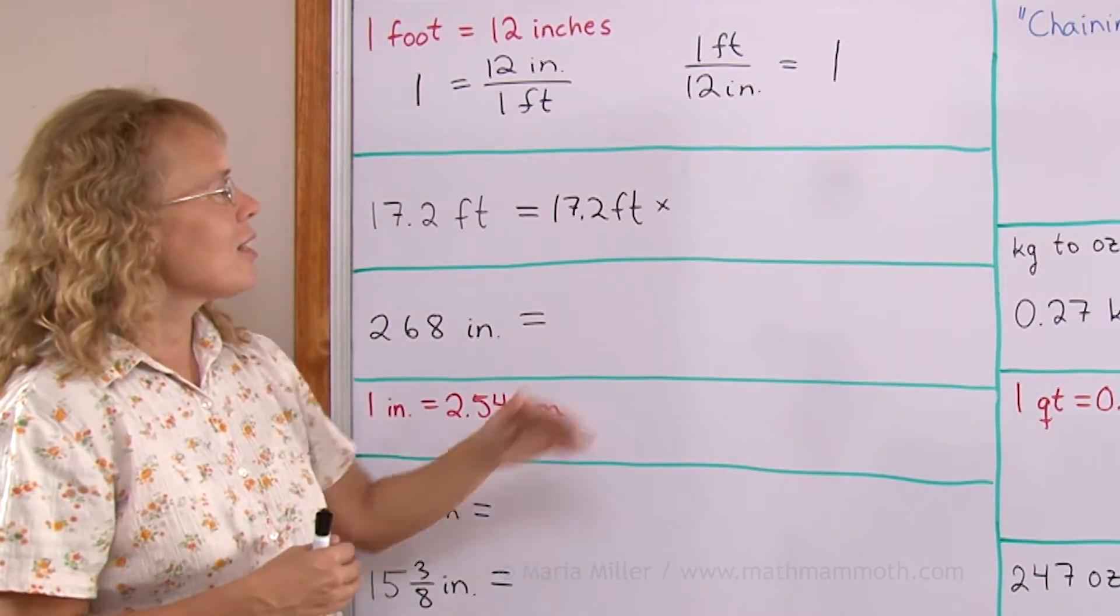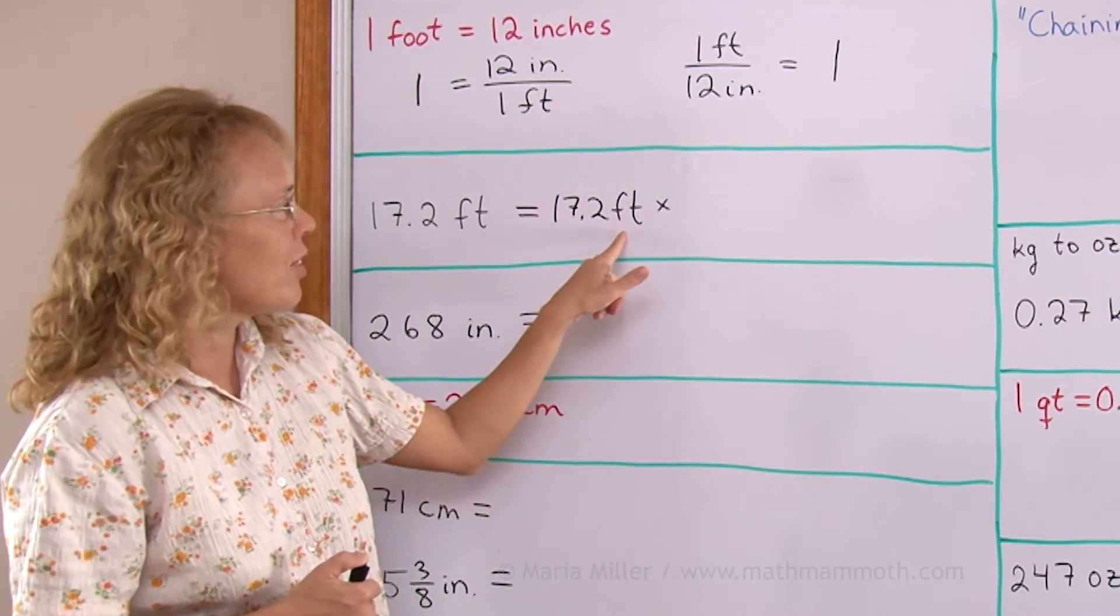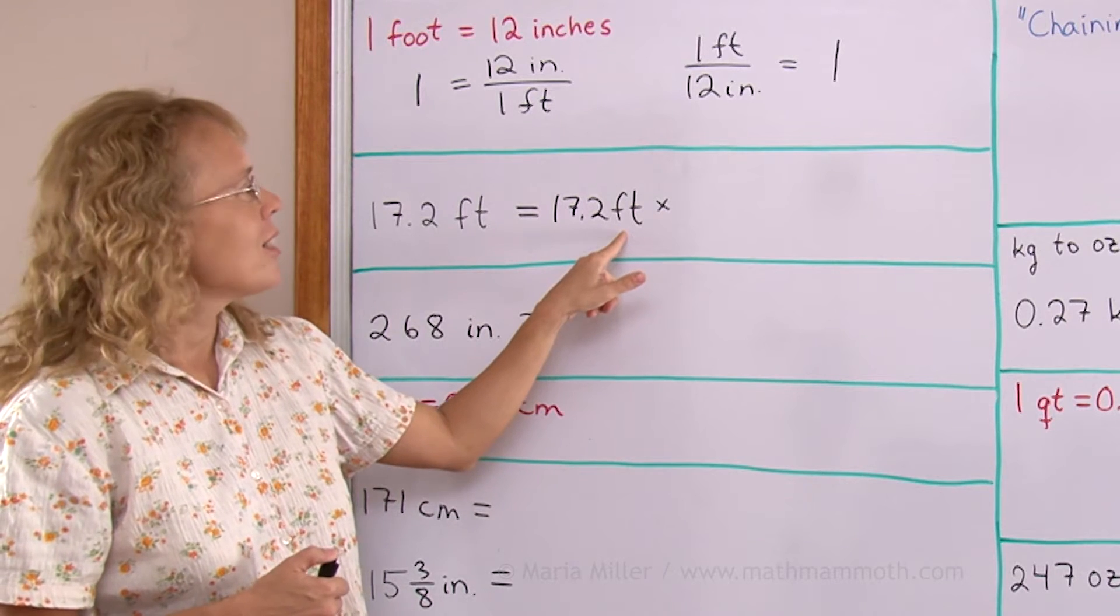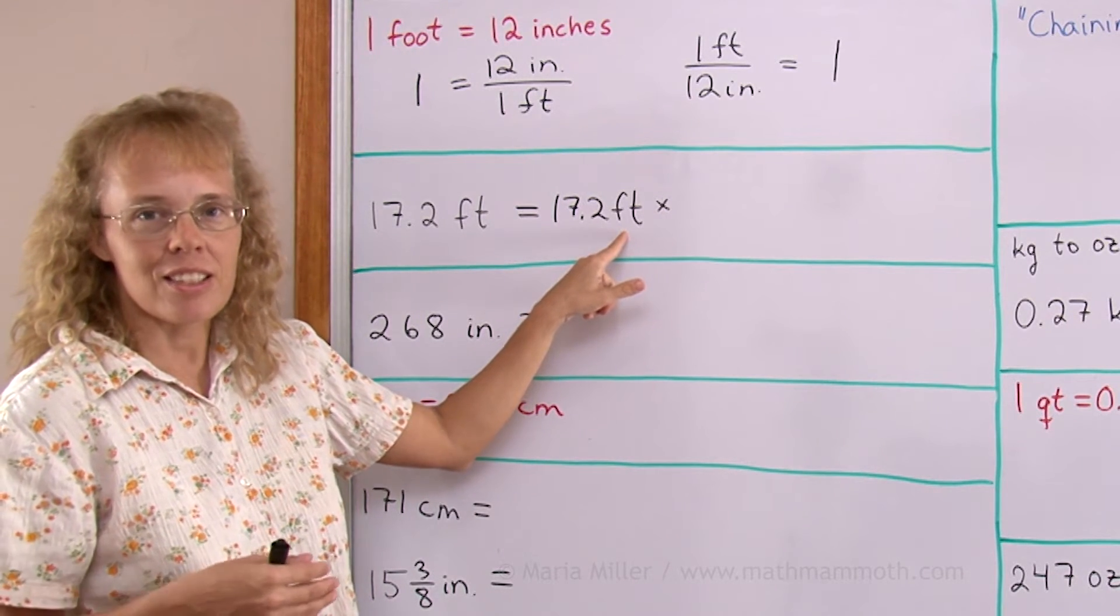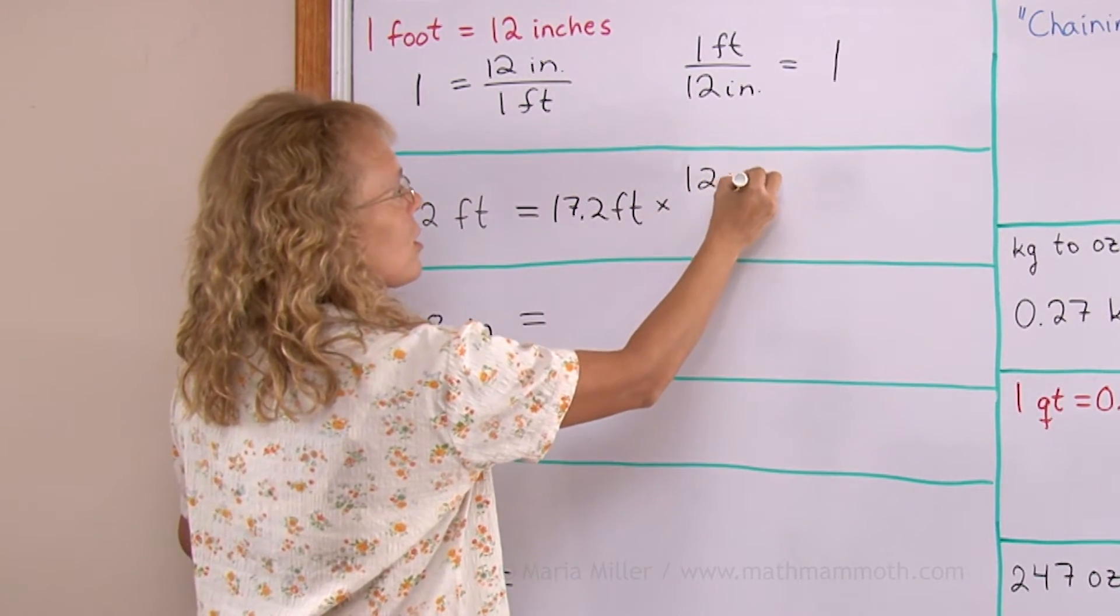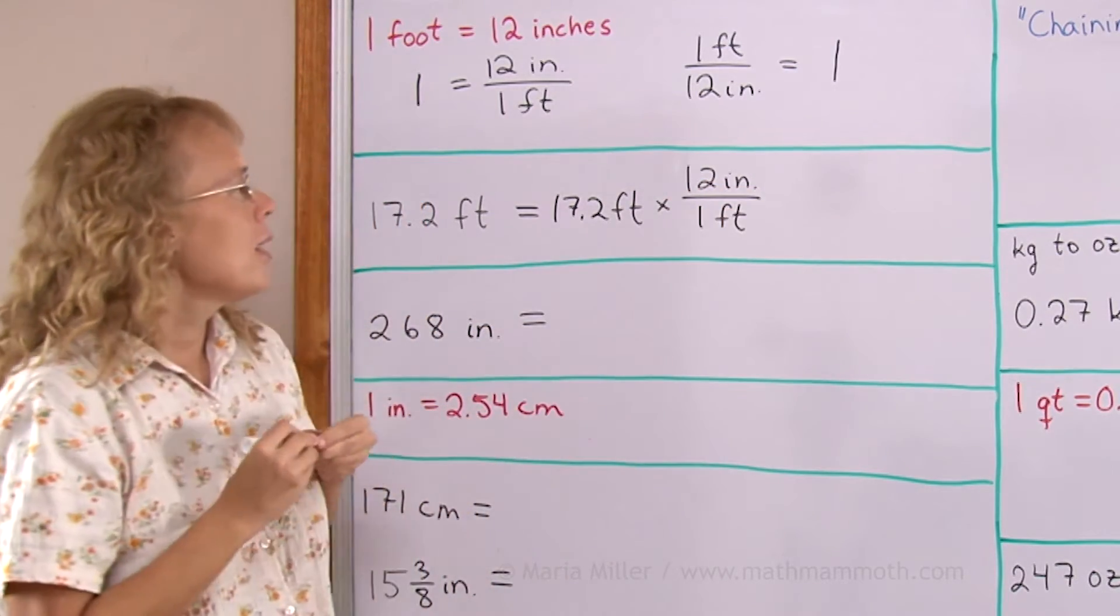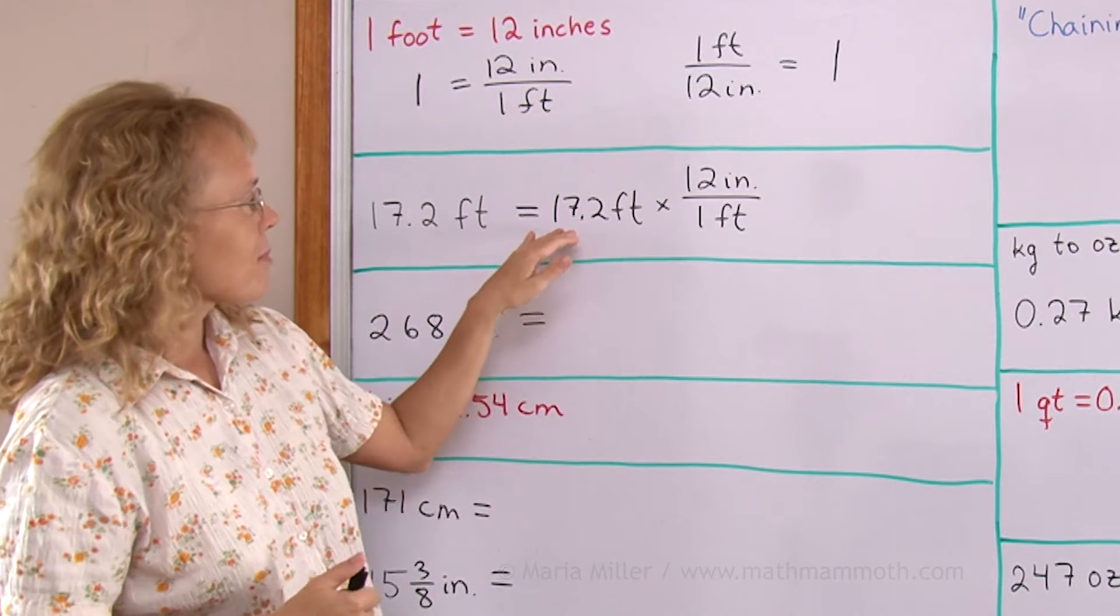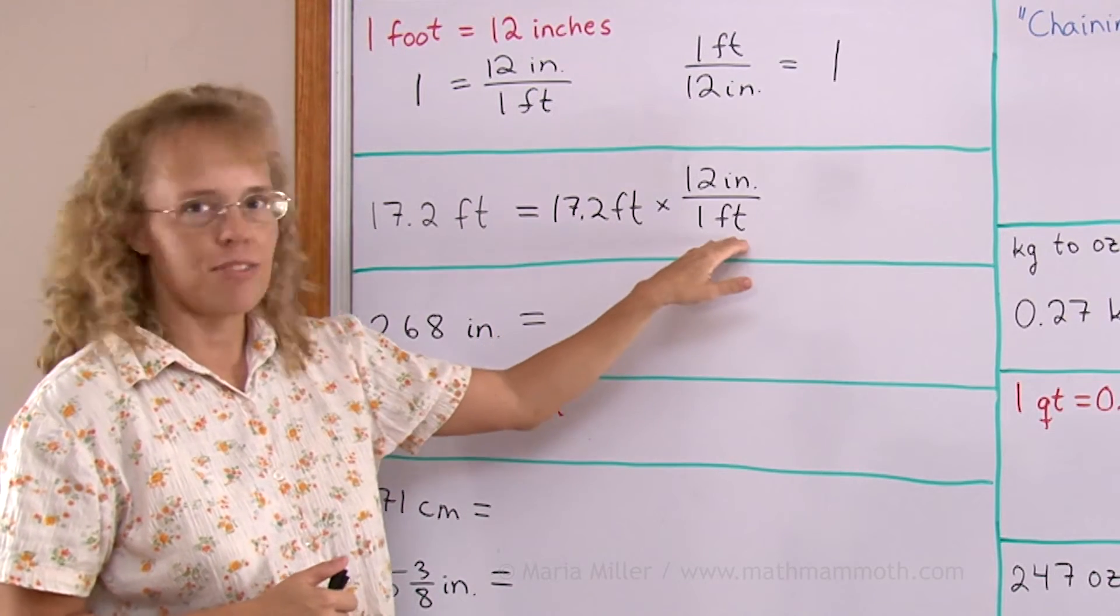Now, in the next step, once I write either this or this, I want to cancel out the feet. And so that's why I want the one where the feet are in the denominator. I want this particular one. So I write here 12 inches over one foot. And now, in this multiplication, I can cancel the feet and feet.